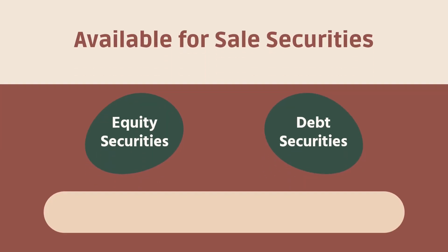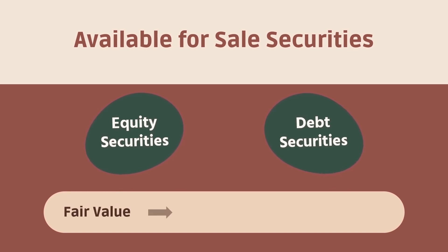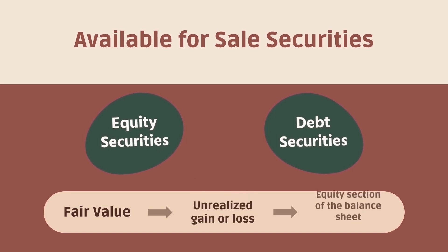To conclude, available for sale securities can be either debt or equity securities, purchased with the intent of selling before reaching maturity. Because they are reported at fair value, some adjustments are needed. Whether the adjustment is an unrealized gain or loss, it will appear in the equity section of the balance sheet.